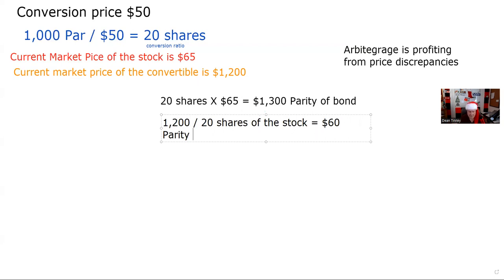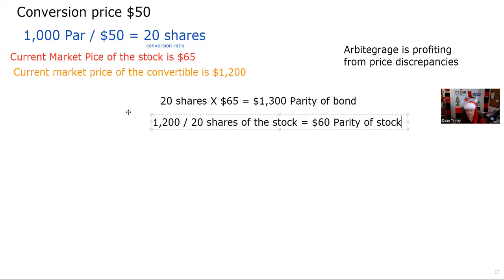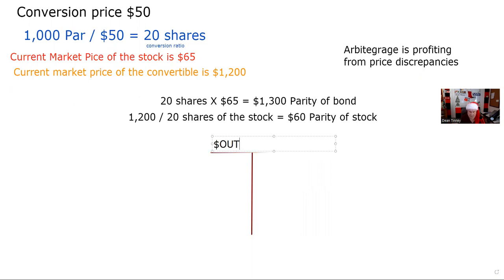It's a screaming deal because there's a price discrepancy. Or another way to say it: if you get the bond, you can get 20 shares of a $65 stock, which would be the equivalent of a bond worth $1,300. Dean always says fire up the T — we always want to track money in and out of somebody's account. The question says how do you best profit from this situation? You're given choices about whether to buy five bonds and sell the stock, or buy the stock and sell the bonds.